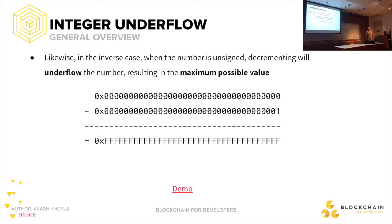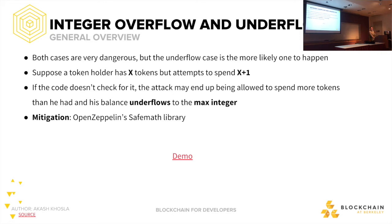Why might integer underflow be great for an attacker? If you have zero money and get the contract to subtract one, next thing you know you're effectively the richest person — that is, if the contract can pay out. That only happens with unsigned integers; you can also have regular ints which use two's complement. Both cases are very dangerous, but underflow is more likely to happen. For example, suppose a token holder has X tokens but attempts to spend X+1. If the code doesn't check for it, the attacker may end up being allowed to spend more tokens than they had and their balance underflows to the max integer. The solution is something called OpenZeppelin's SafeMath.